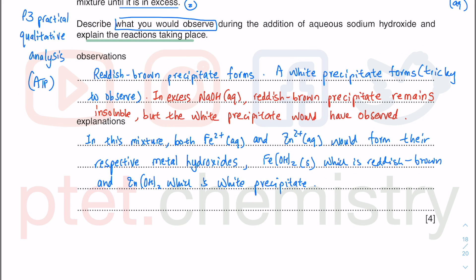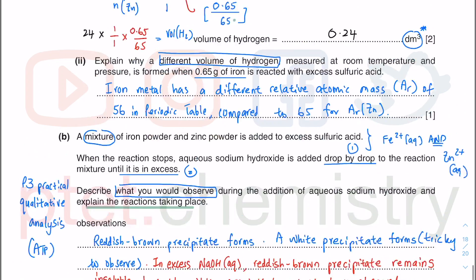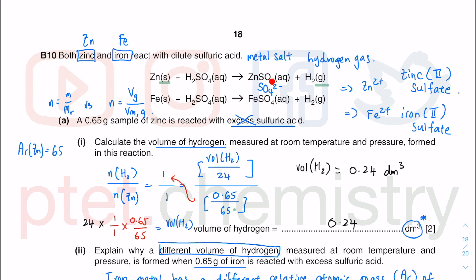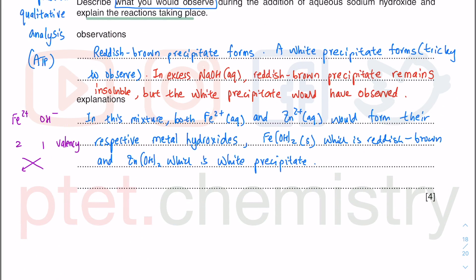For the formula: Fe²⁺ and OH⁻. The valency is based on the charges of the ions. Iron is 2 plus as stated at the beginning of the question when iron powder reacted with sulfuric acid to give iron(II) sulfate. Cross-multiplying (crisscrossing), you get Fe(OH)₂ with brackets indicating two hydroxide ions. Similarly, since zinc is also Zn²⁺ (a divalent cation), you get Zn(OH)₂ as well. Iron(II) hydroxide has iron in the +2 oxidation state and is a reddish-brown precipitate.